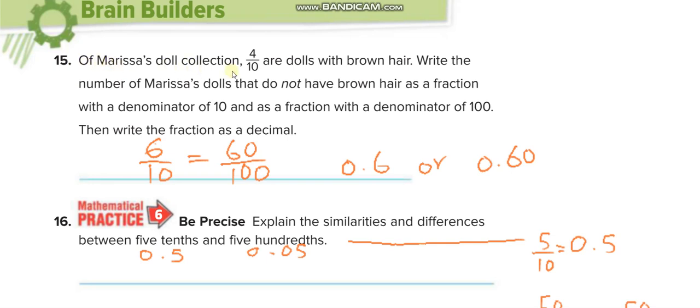Of Marisa's doll collection, 4 over 10 are dolls with brown hair. Write the number of Marisa's dolls that do not have brown hair. So if 4 out of 10 have brown hair, how many don't have? 6 out of 10. It can be 60 over 100, 0.6, or 0.60.